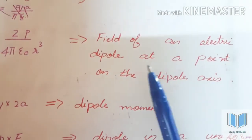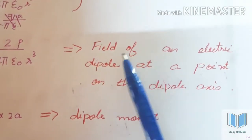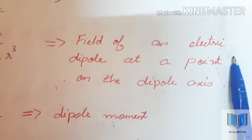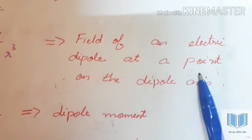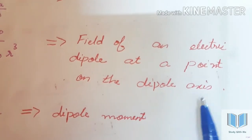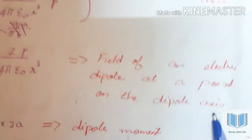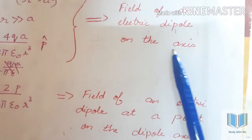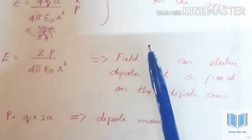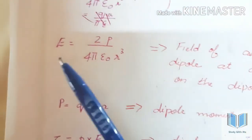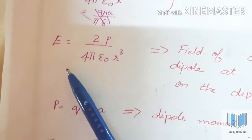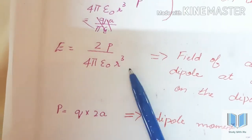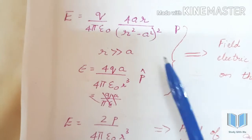This is the field of an electric dipole at a point on the dipole axis. On the axial position, E is equal to 2p by 4πε₀ r cubed. You can now compare these two equations for axial and equatorial fields.